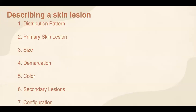In order to be able to describe a skin lesion, first we need to learn the language of dermatology. This is a language we share to describe skin lesions, which is also known as morphology. To describe a lesion correctly, we need to keep in mind seven components: the distribution pattern of the lesion, the primary lesion, the size of the lesion, its demarcation, color, secondary lesions, and the configuration. We will go through each point in detail.